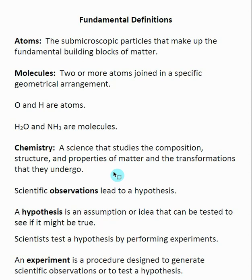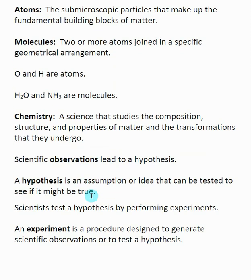Before we get into that, we need to talk about how some of the original concepts of chemistry came about. This led from scientific observations, and from this it led to the idea of a hypothesis. A hypothesis is just an assumption or an idea that people put forward in order to be tested — we say, I think that this is what's happening.